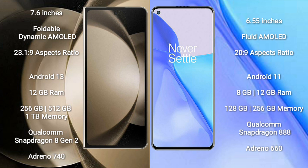OnePlus 9 comes with 8GB or 12GB RAM and 128GB or 256GB internal storage. It features the Qualcomm Snapdragon 888 processor and Adreno 660 GPU.